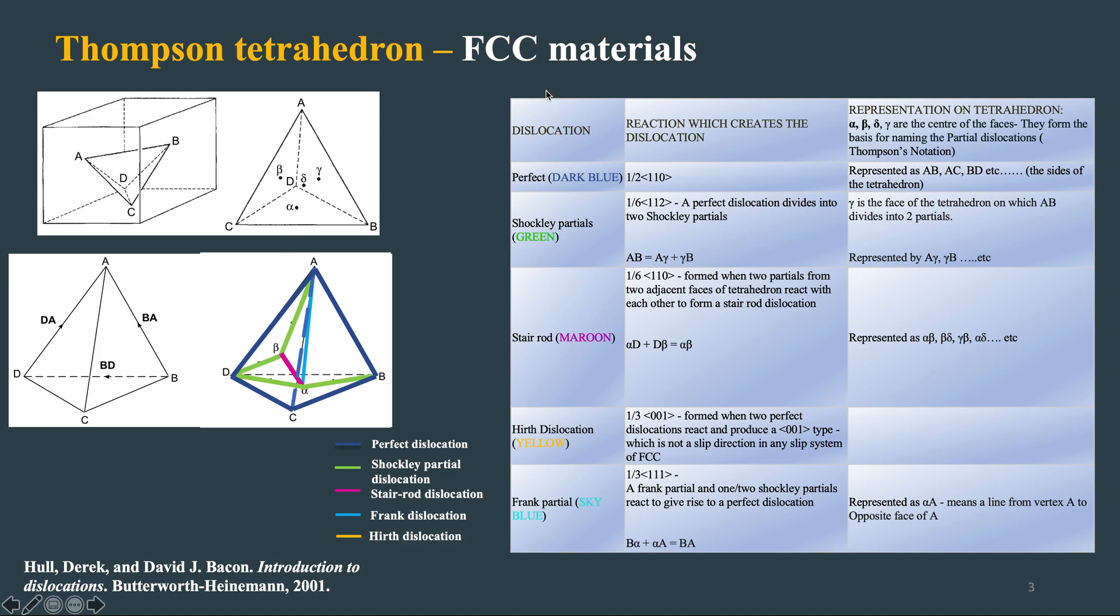And if you see here, there are five kinds of dislocations in FCC materials: Perfect, Shockley, Stair-rod, Hirth, Frank partial.